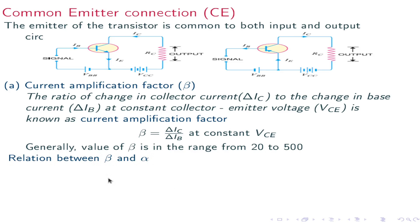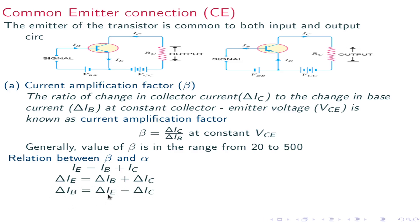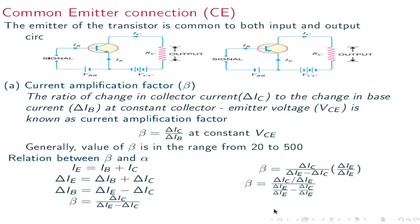Let us calculate the relation between beta and alpha. We have Ie equals Ib plus Ic, therefore delta Ie equals delta Ib plus delta Ic, or delta Ib equals delta Ie minus delta Ic. Therefore beta equals delta Ic divided by delta Ib equals delta Ic divided by (delta Ie minus delta Ic). Multiplying numerator and denominator by delta Ie gives: beta equals alpha divided by (1 minus alpha). That is the relation between beta and alpha.